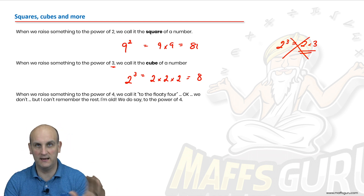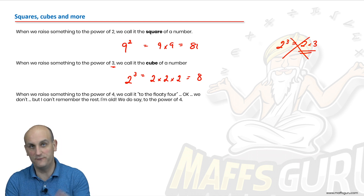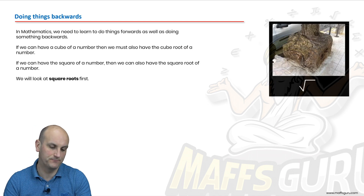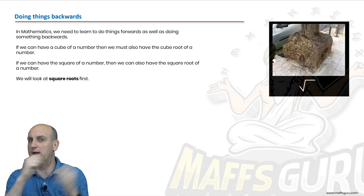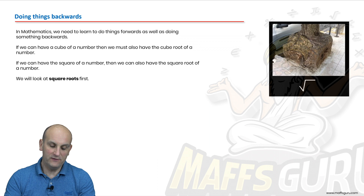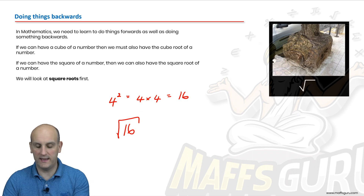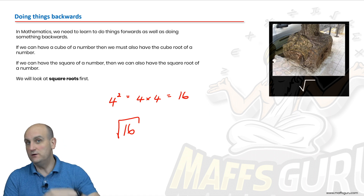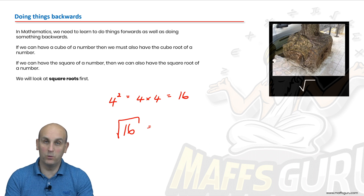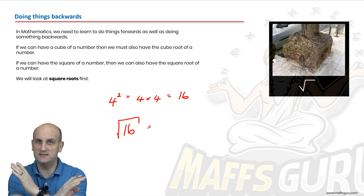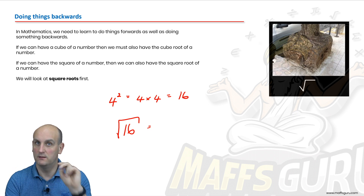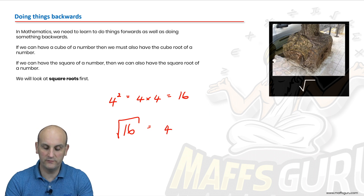When we raise something to the power of four, I just call it 'to the floaty four' — we'll say something to the power of four; read the language in the question. Now what we do forwards, we can do backwards. If we know that four squared is four times four which is sixteen, I also need to know the square root. There should be a little two in the square root sign, but convention says we don't need to write it — if you don't see a number there, imagine it's a two. It asks: what two same numbers multiplied together give me sixteen?